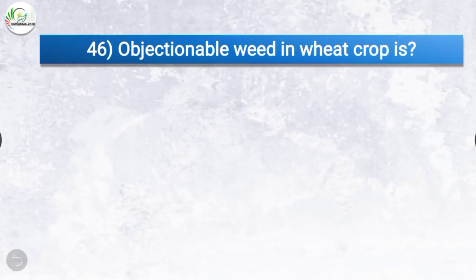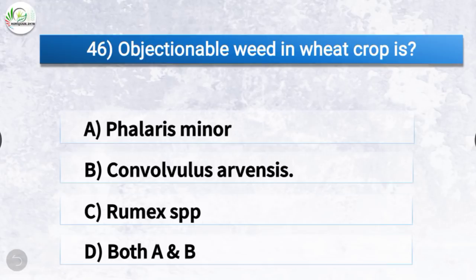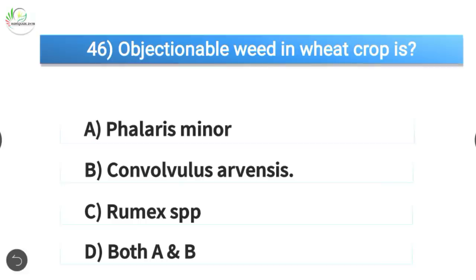Question number 46: Objectionable weed in wheat crop is? The correct answer is option B, Convolvulus arvensis. Objectionable weed in wheat crop is Convolvulus arvensis.